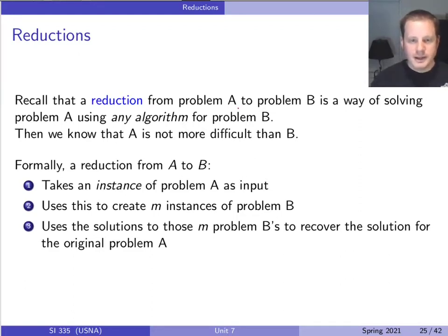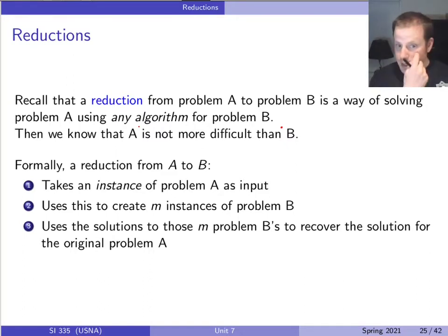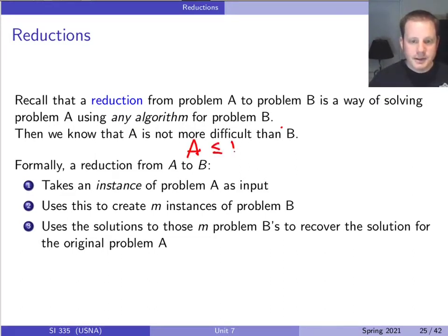I always get confused — there's no good way to remember which direction, you just have to kind of memorize it. But a reduction from problem A to problem B is starting with problem A and using problem B to solve it — solving any input for problem A using any algorithm for problem B. And that shows us that B is at least as difficult as A, so we would write A ≤ B in terms of difficulty.